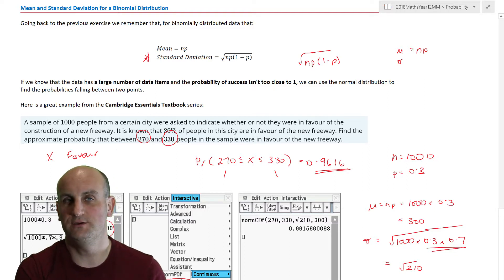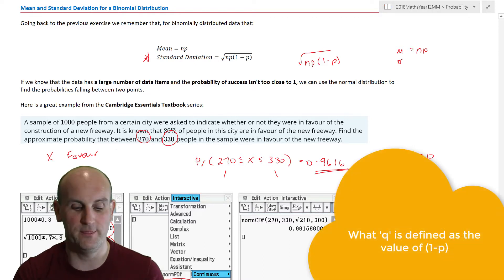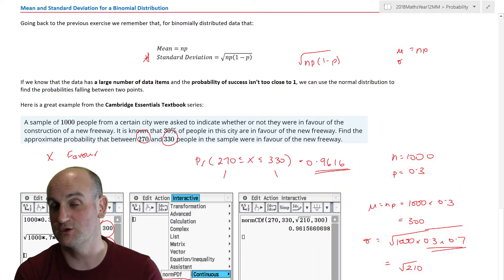Now, when can we use the normal distribution? Well, this is the rule. When n times p is greater than 5, or when n times q is also greater than 5. So when those two things are actually both true, so the n times p and n times q is greater than 5, then we can confidently use the binomial, sorry, the normal distribution to approximate the binomial distribution. If not, I'm afraid it's back to the stuff that was in that video being shown over there.